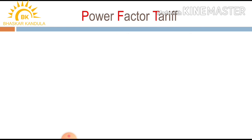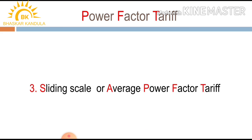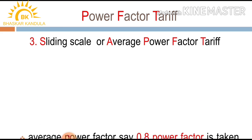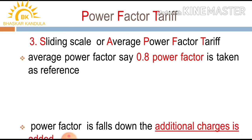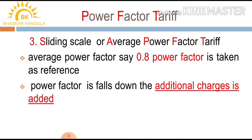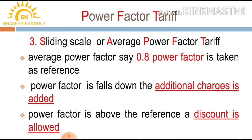In the sliding scale or average power factor tariff, an average power factor of 0.8 is taken as the reference. When the power factor falls below the average value of 0.8, additional charges are added. If the power factor is above the reference value, a discount is allowed to the consumers.